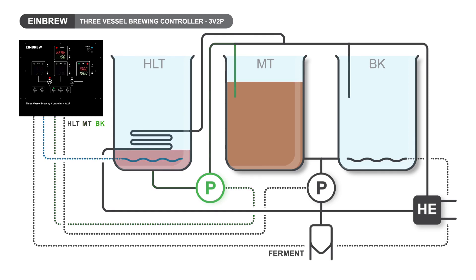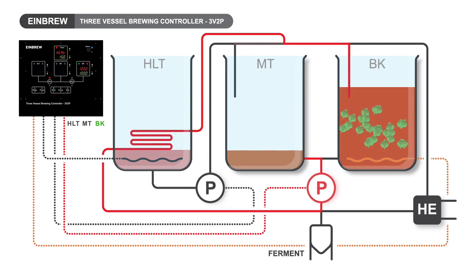With up to nine hop insertion time alarms, you won't miss an insertion. After the boil, it will cool to the preset fermentation temperature. Simply start your active cooling and it will alarm when it has reached the pitching temperature.